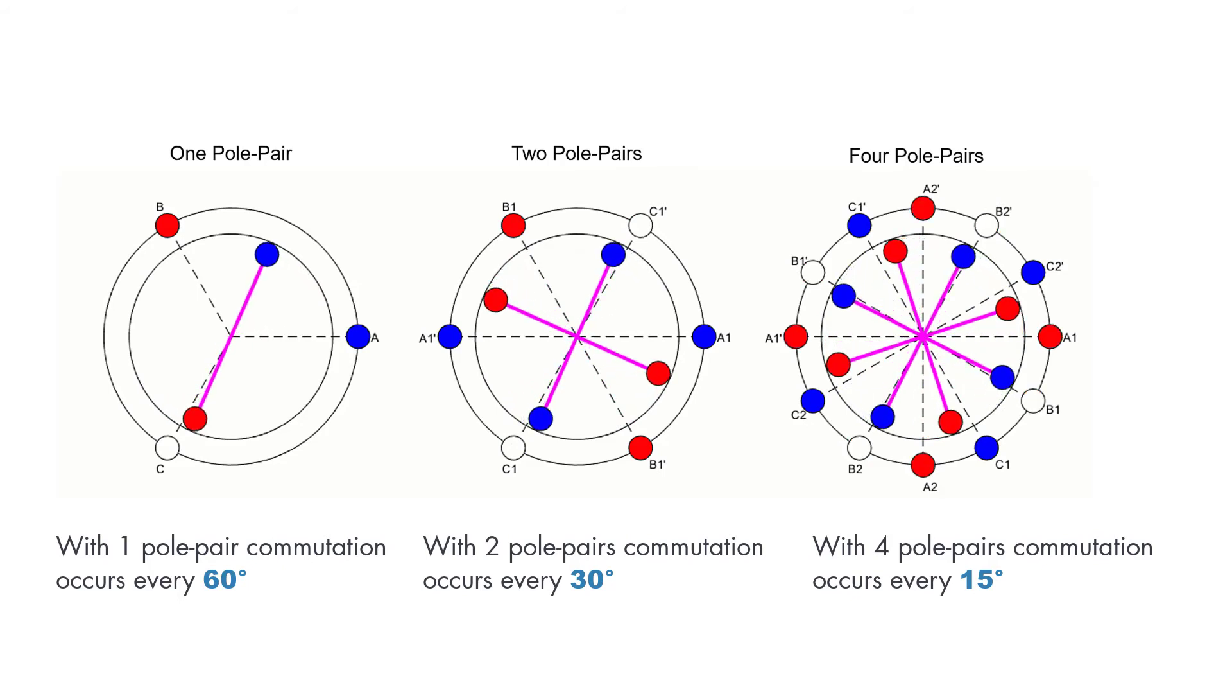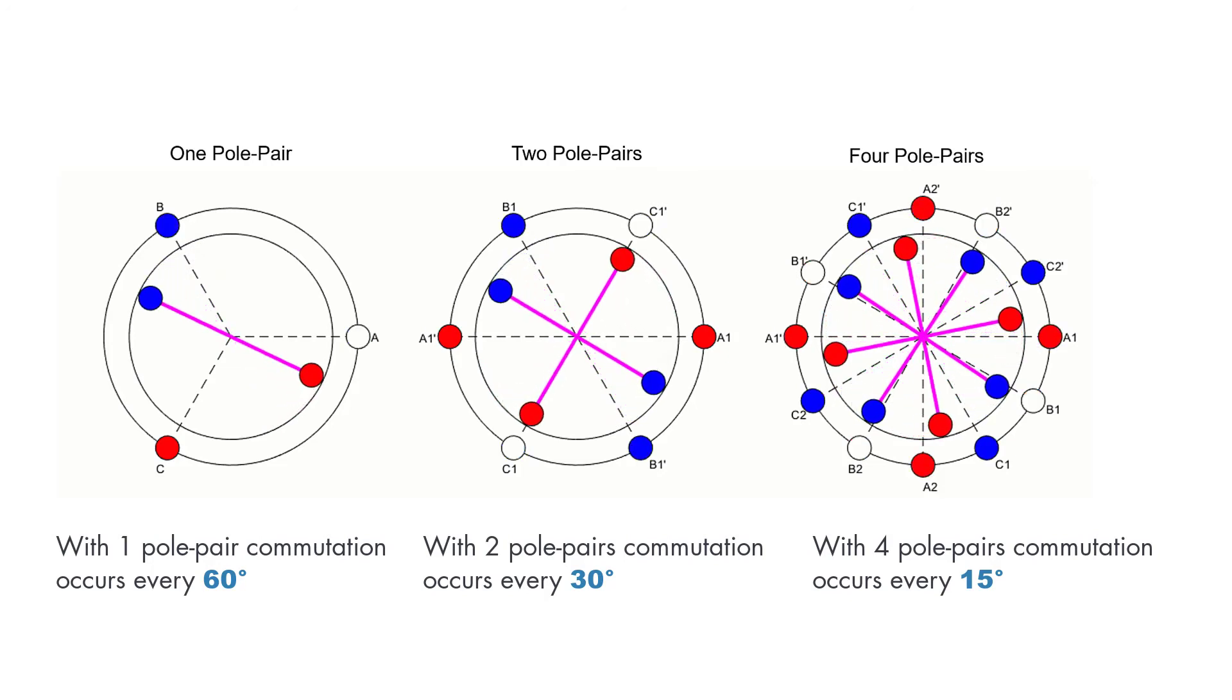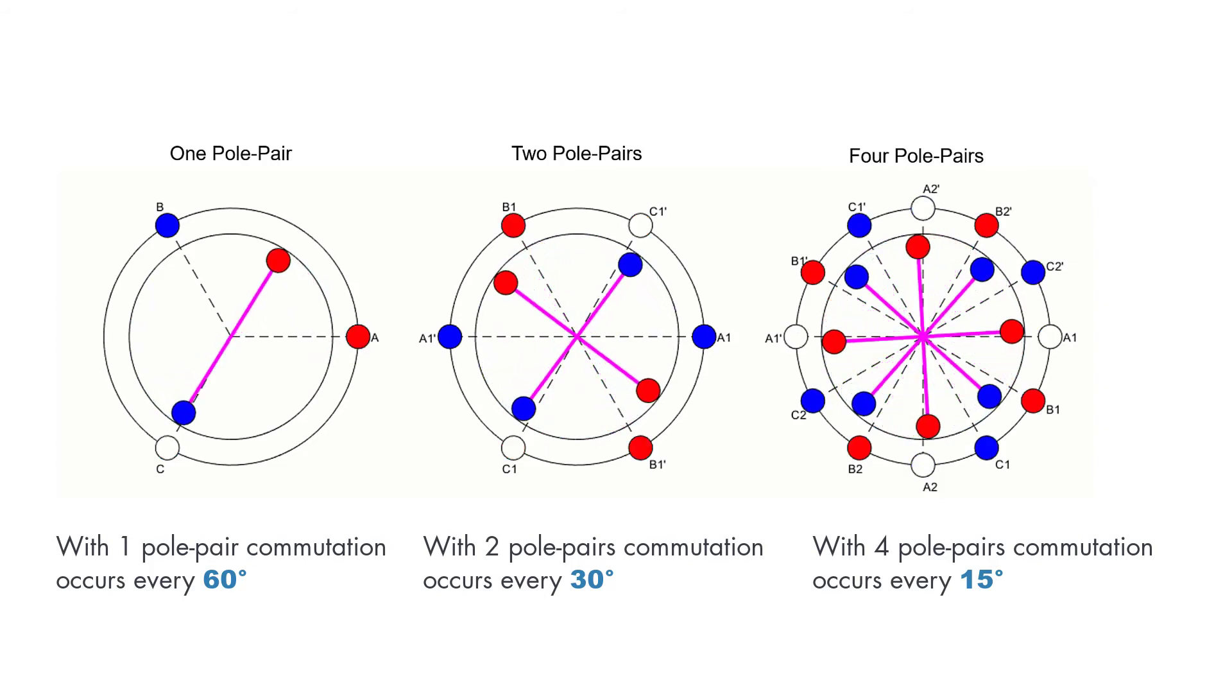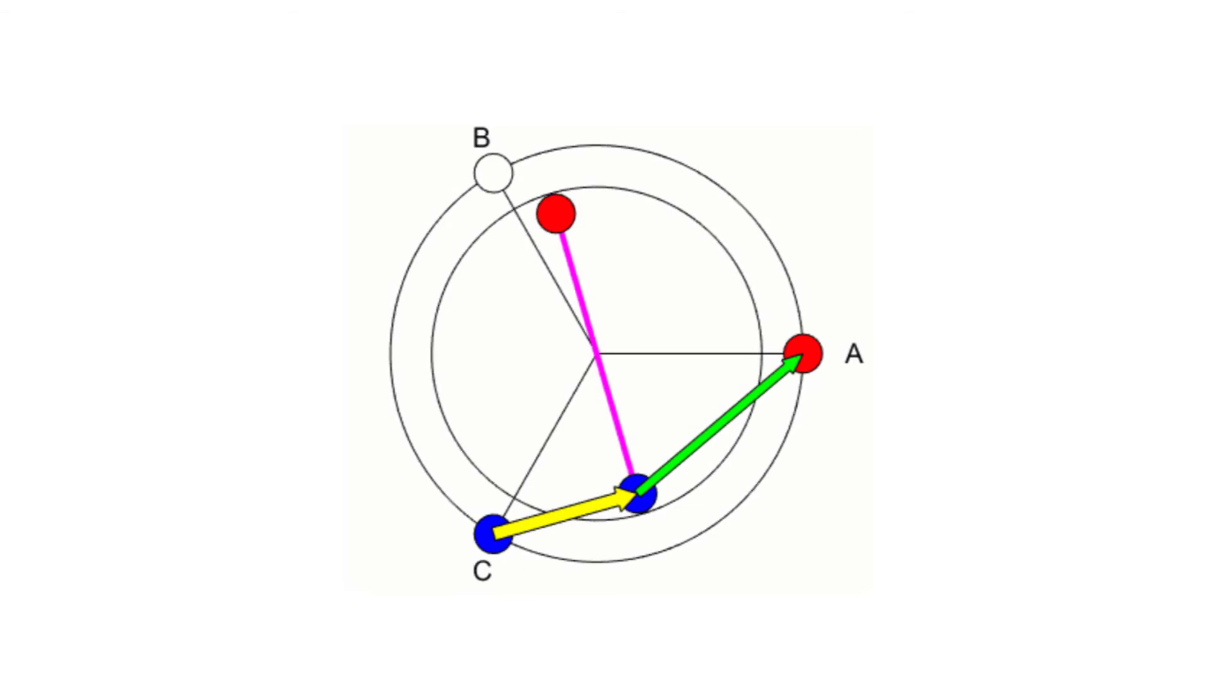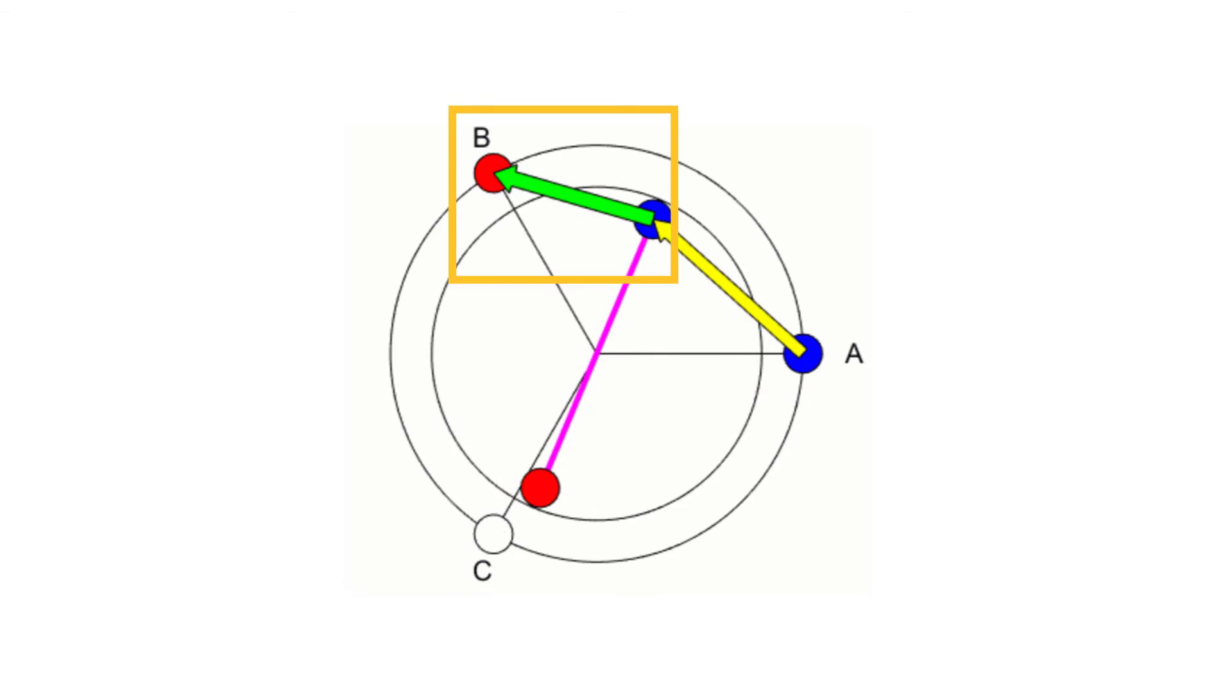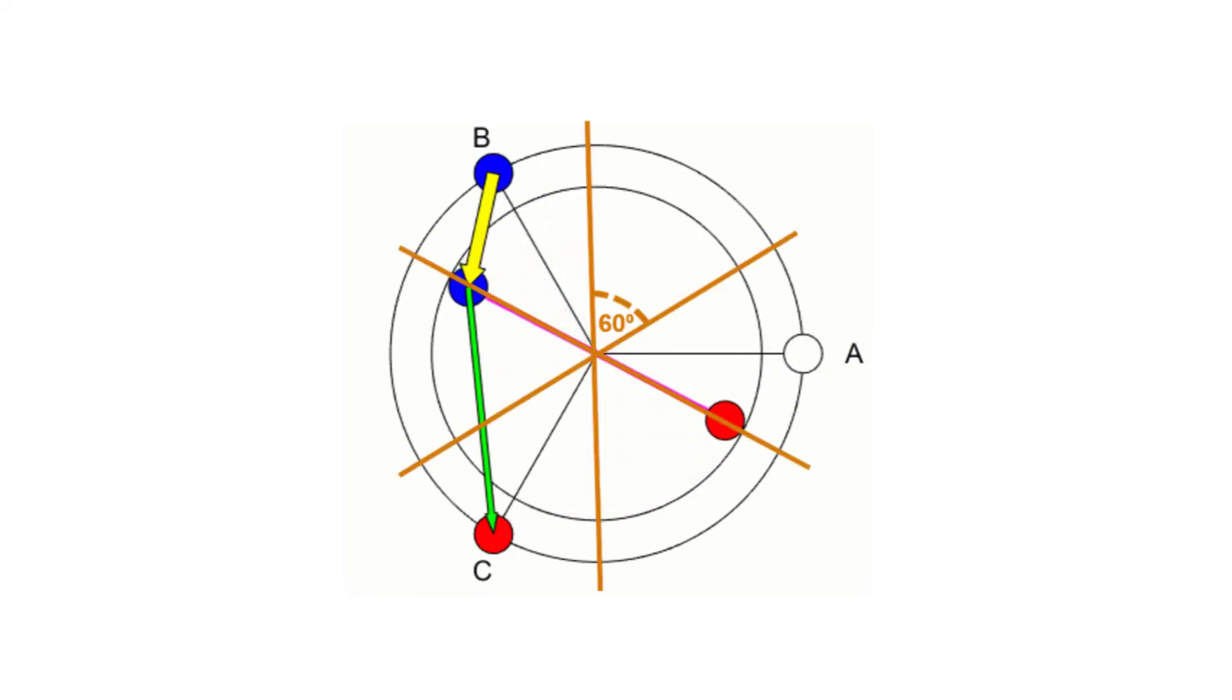To properly commutate the motor at the right times with the correct phases, we need to know the rotor position, which is usually measured by using hall sensors. Let's discuss how the poles interact with each other. Here, the arrows represent the relative magnetic forces, and the arrow thickness indicates the field strength. These two poles of the same kind repel each other, making the rotor turn counterclockwise. At the same time, the opposite poles attract each other, and the rotor keeps on turning in the same direction. Once it completes 60 degrees of rotation, the next commutation occurs.